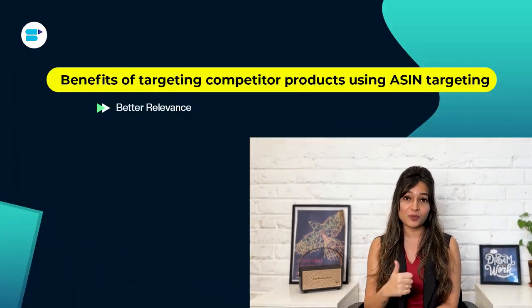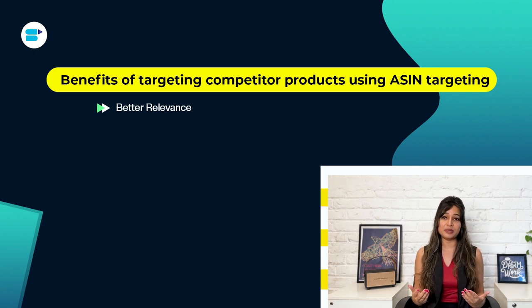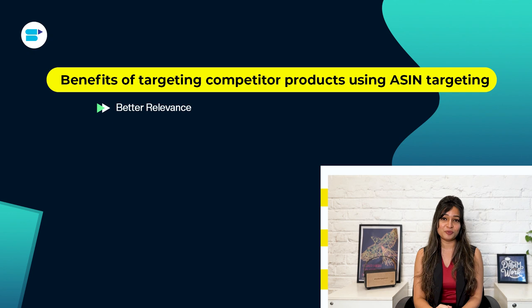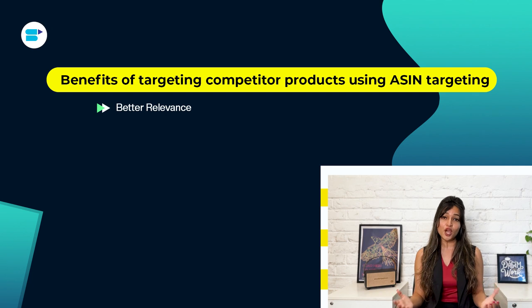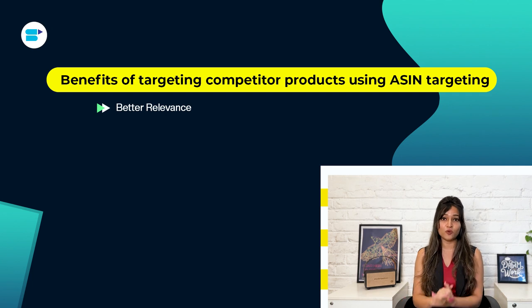There are several benefits to targeting competitor products using ASIN targeting, including better relevance. When you target your ads at specific competitor products, you make sure your ads are seen by people who are most likely interested in what you offer. For instance, if you sell a new brand of smartphone, you can aim your ads at the ASINs of popular smartphones from other brands to reach customers already looking to buy.